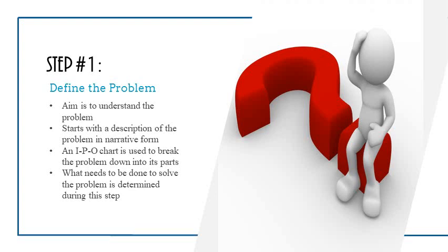Step one: define the problem. The aim of this step is to understand the problem. You start with a description of the problem in narrative form — for example, 'I am feeling thirsty.' We then develop what is called an IPO chart, which we will look at a little later, and use this chart to break down the problem into parts. During this step, what needs to be done to solve the problem is determined.